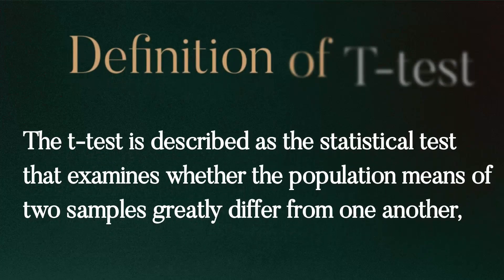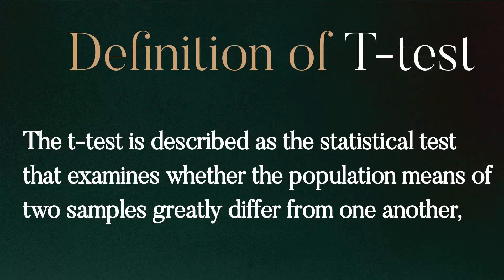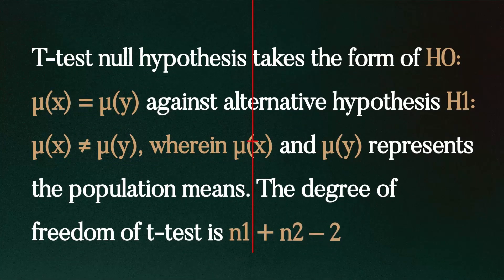What is t-test? The t-test is described as the statistical test that examines whether the population means of two samples greatly differ from one another. In t-test, null hypothesis takes the form of H0: μx equals μy, against alternative hypothesis H1: μx does not equal μy, wherein μx and μy represent the population means. The degree of freedom of t-test is n1 plus n2 minus 2.